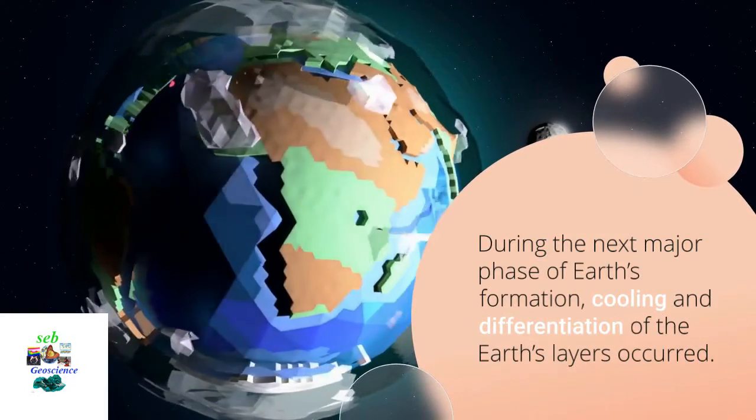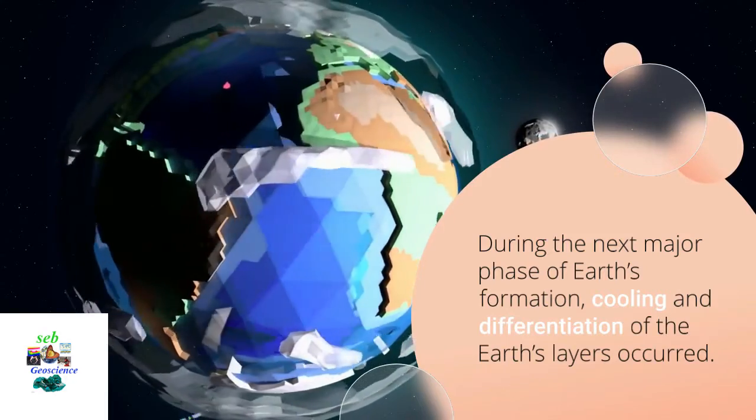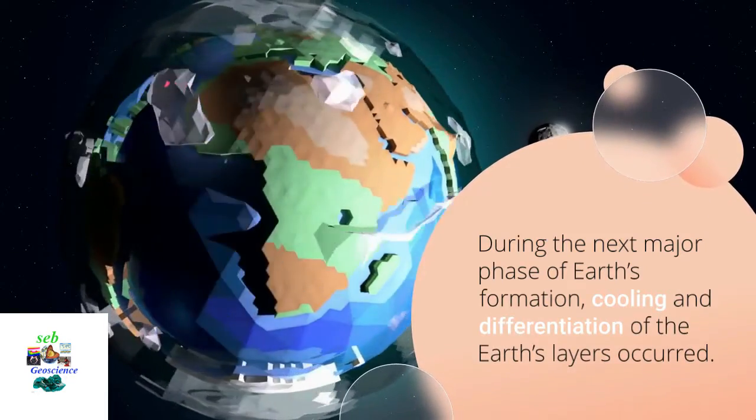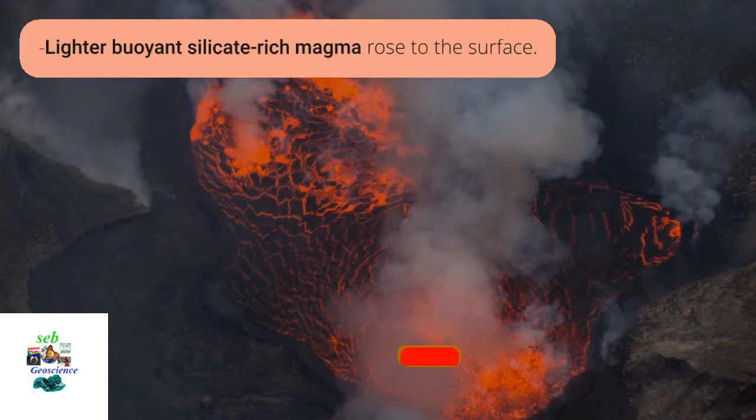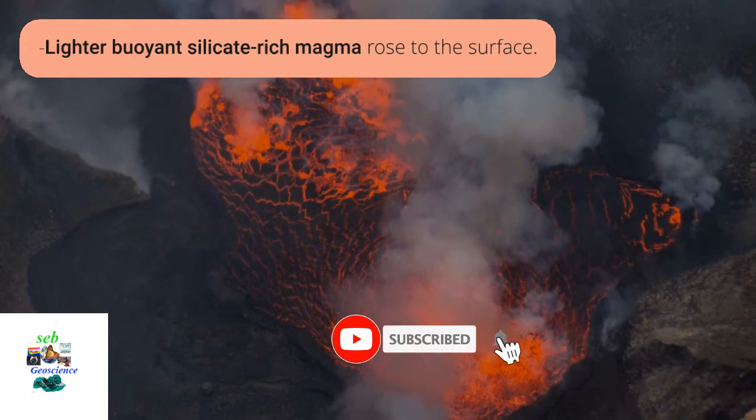During the next major phase of Earth's formation, cooling and differentiation of the Earth's layers occurred. Dense materials sank to the center, forming an iron-nickel-rich core. Lighter buoyant silicate-rich magma rose to the surface.